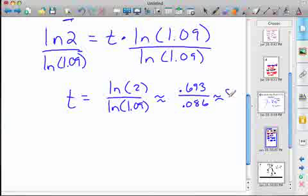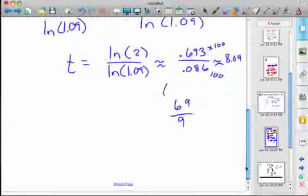Okay, 8.04. But where's the 72? All right. Well, I'm running out of time. So I'm going to multiply this top by 100, and this bottom by 100. And notice you get 69 divided by 9, approximately. And so this is a close approximation to the 72 we talked about earlier.